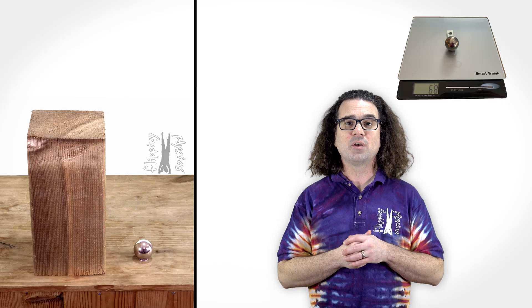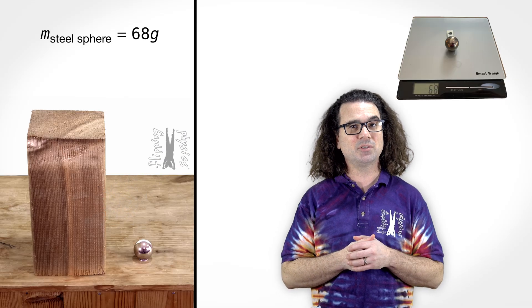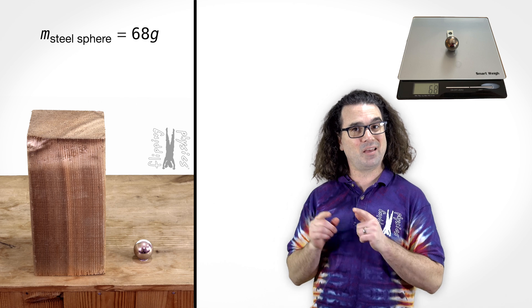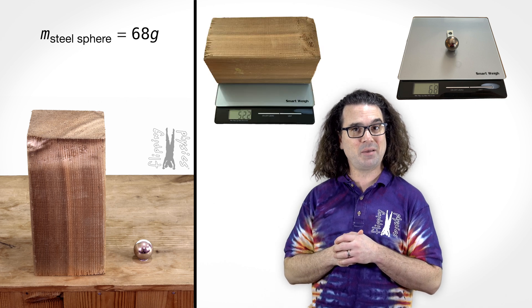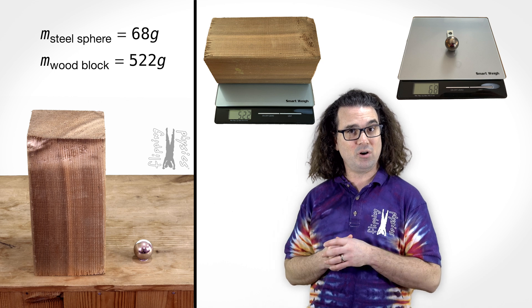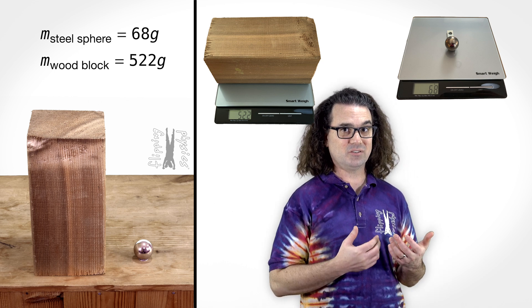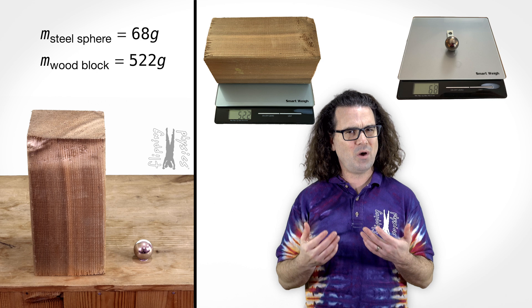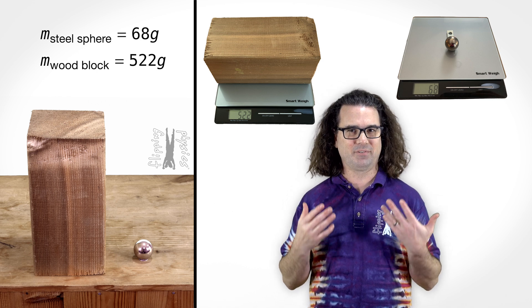This steel sphere, which has a mass of 68 grams, actually is less massive than this block of wood, which has a mass of 522 grams. So, this block of wood is more massive than this steel sphere. However, the two objects are of completely different sizes.